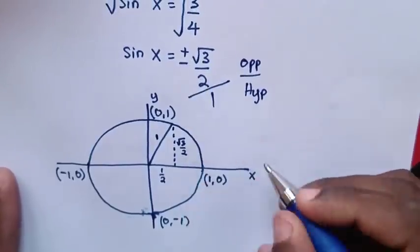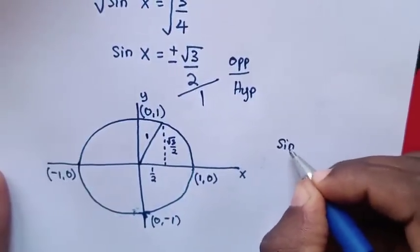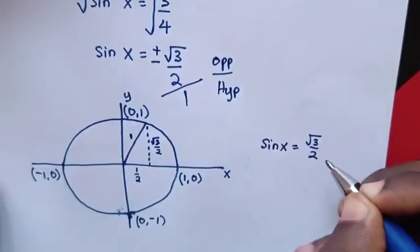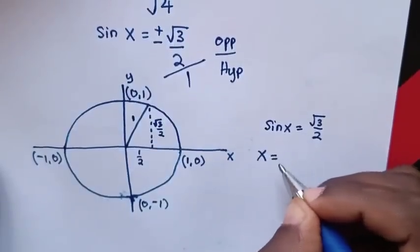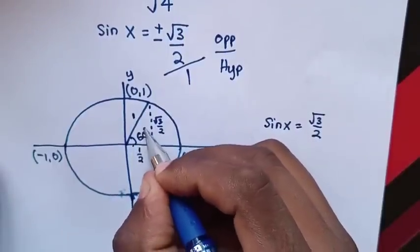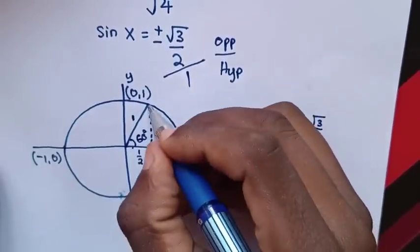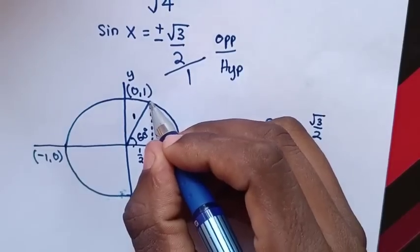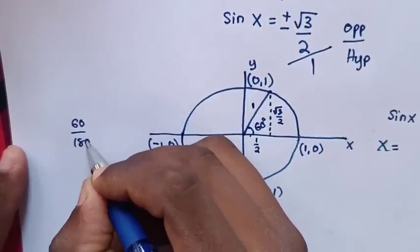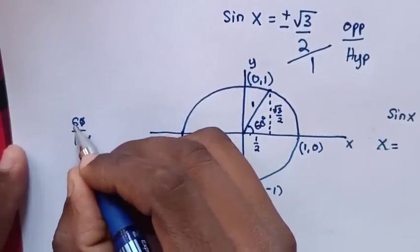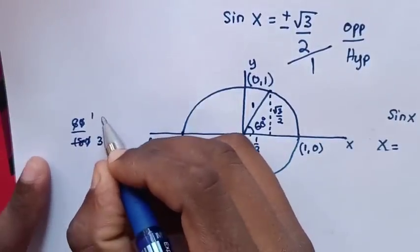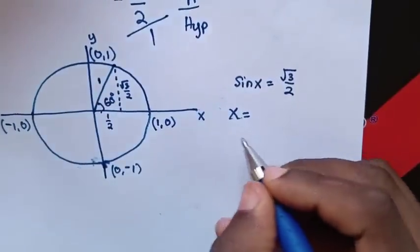When sin x equals positive square root of 3 over 2, the first value of x from the right-angled triangle is 60 degrees. Converting 60 degrees to radians: 60 divided by 180 times pi, which simplifies to pi over 3.